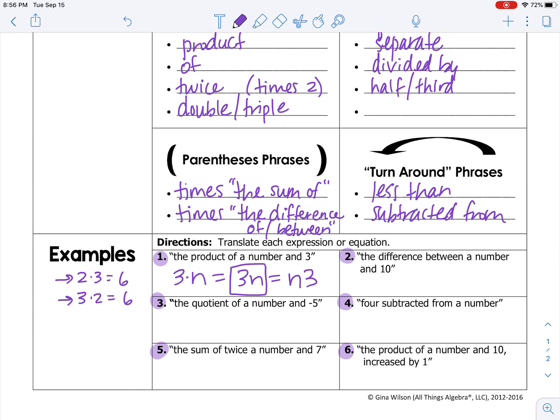For number two, the difference between a number and ten. Difference means minus. A number, we're going to let be the letter n. So n minus ten. The quotient means divide. The quotient of a number n and negative five. So n divided by negative five. This also can be written as n over negative five. This is another way to say divide.